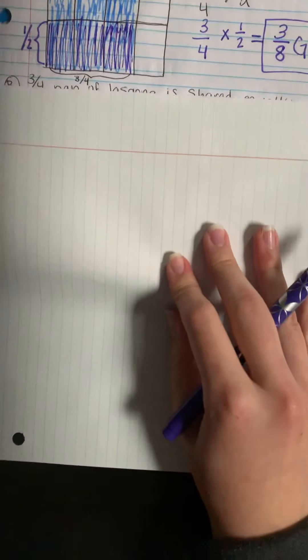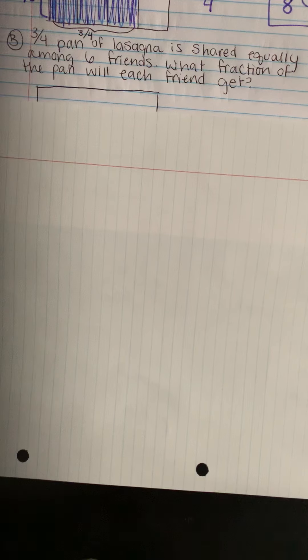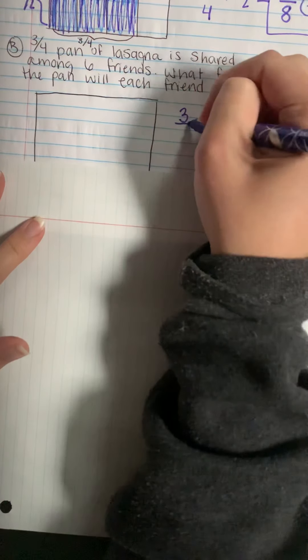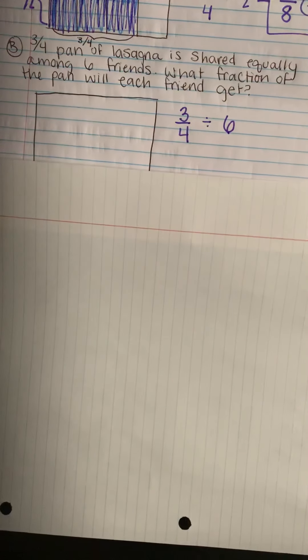So let's do another problem like this where we have lasagna. Three-fourths a pan of lasagna is shared equally among six friends. What fraction of the pan will each friend get? Again, this is a partitive division problem since we're told that there are six parts or that the lasagna is being shared equally among six friends. A division expression that we could use to represent this story problem would be three over four or three-fourths of the pan divided by the six friends that are going to eat it.